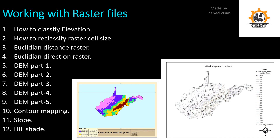The last official section is Working with Raster Files. We'll cover classifying elevation, reclassifying raster cell sizes, Euclidean distance rasters, and Euclidean direction rasters. Videos 5 through 9 cover digital elevation mapping, divided into five parts for easier understanding. The tenth video covers contour mapping, and then we look at slope mapping and hillshade mapping.